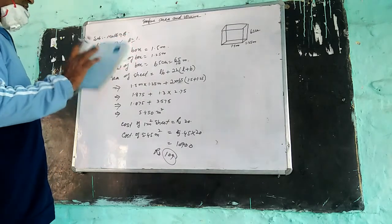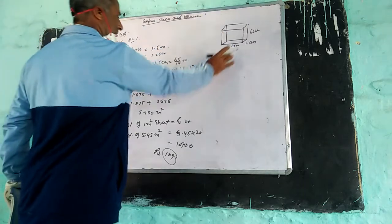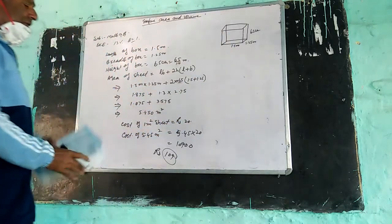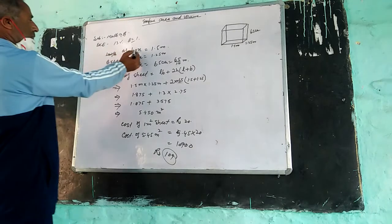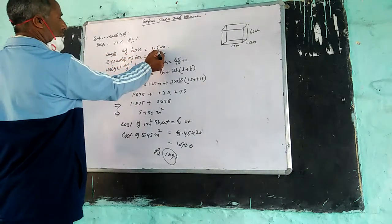We have to find the area of the sheet required for making the box and the cost of sheet is 20 rupees per meter square.